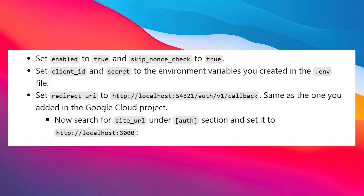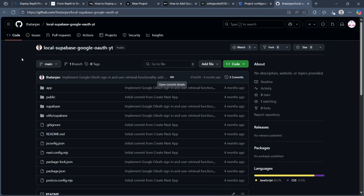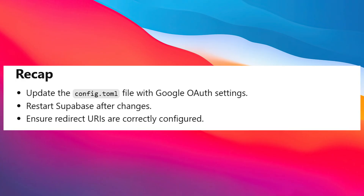Search for site_url under the auth section and set it accordingly. Now restart Supabase — after updating the config, type supabase stop and then supabase start. You can use the provided Next.js repository to test Google sign-in, and you can find the repository on GitHub. Make sure the config.toml file is updated with Google auth settings, Supabase is restarted after changes, and redirect URIs are correctly configured.